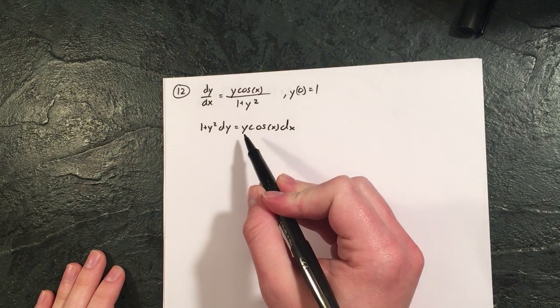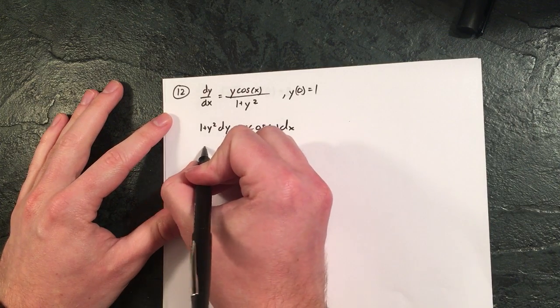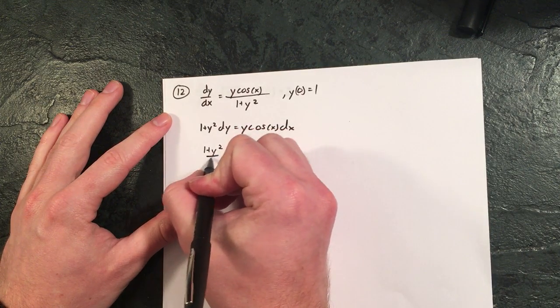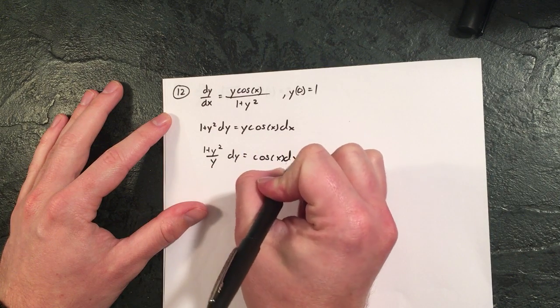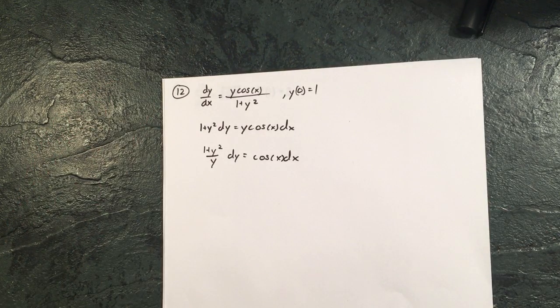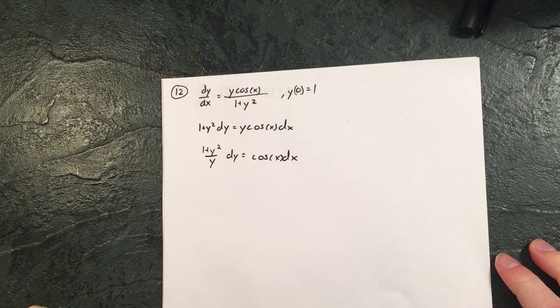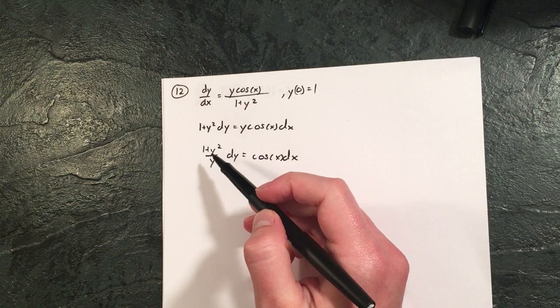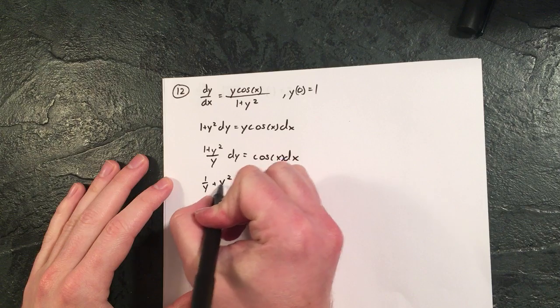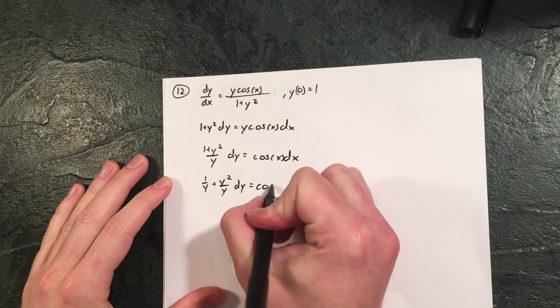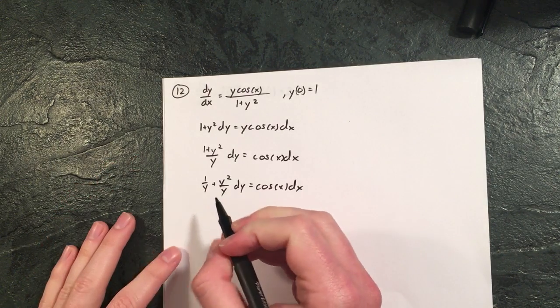But notice we still have the y left here on the right side, so if we divide by y, we finally get separation of variables correctly, which is the first step for all these differential equations. Now this is not in a nice form where we can actually integrate it, but we can rewrite it. Let's get that in a form that's even nicer for ourselves.